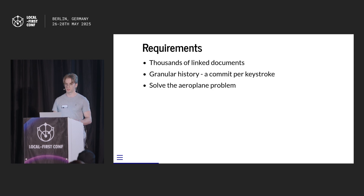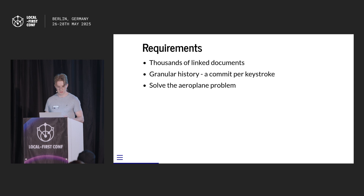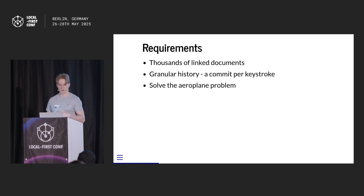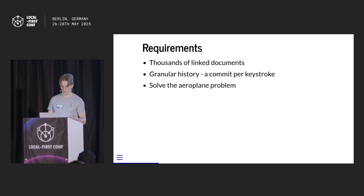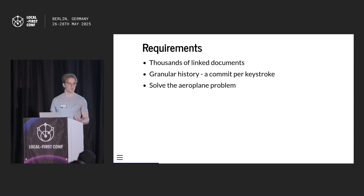We want to solve the aeroplane problem — where you and I are collaborating on something at the airport, synchronizing via a sync server which is just another node that happens to be very online and very available. Then we get on the aeroplane and have to synchronize between our two laptops via terrible plane Wi-Fi. We have mostly the same data since we just synced via the same server, but we've never talked to each other before. We want the amount of data exchanged over this crappy connection to be proportional to the changes we're actually making at that time. That rules out a bunch of designs we might otherwise use.